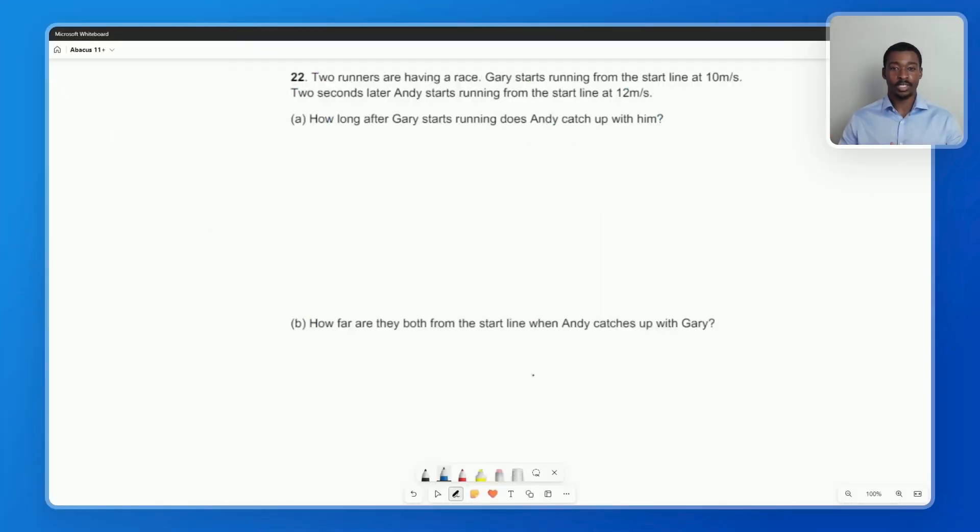For this next question, we're told there are two runners having a race. Gary starts running from the start line at 10 meters per second. Two seconds later, Andy starts running from the start line at 12 meters per second. Part A, we have to work out how long after Gary starts running does Andy catch up with him. So how do we think about this kind of question?